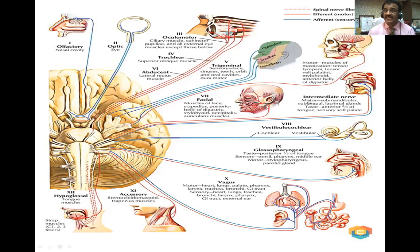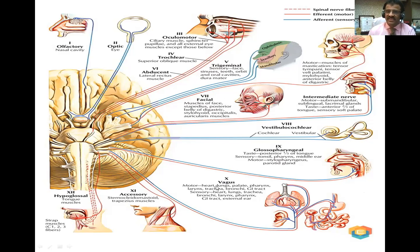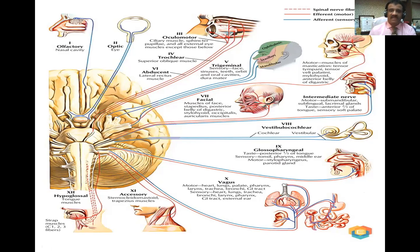The ninth cranial nerve is the glossopharyngeal nerve, for the tongue and pharynx. The seventh cranial nerve gives the chorda tympani for the anterior two-thirds tongue sensation, while glossopharyngeal is for the posterior one-third. The tenth vagus nerve is also autonomic and is a mixed nerve. The eleventh is a motor nerve for important muscles in the pharynx and neck. The twelfth hypoglossal nerve is a motor nerve to the muscles of the tongue.